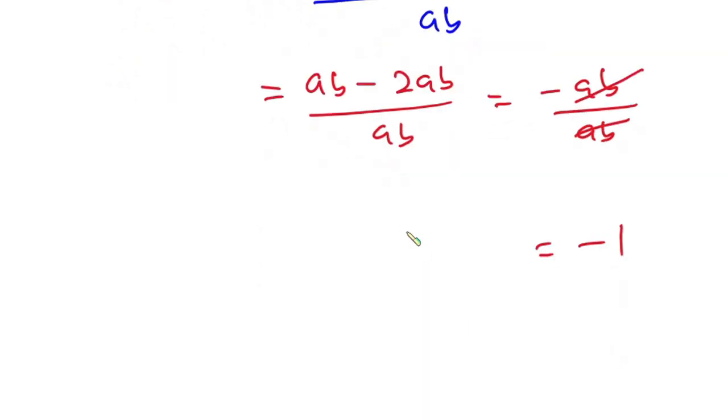So in all we can say that b over a plus a over b is equal to negative 1, and this is our final answer.